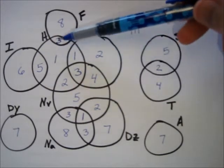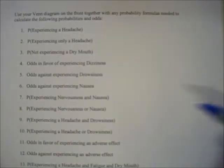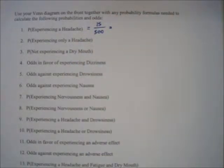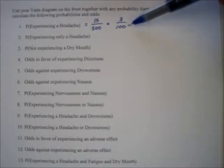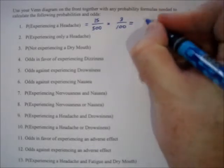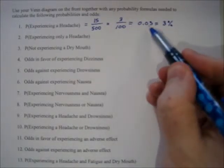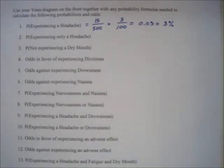We have a total of fifteen people who experienced a headache out of 500. So this is 15 out of 500, which reduces to 3 out of 100. You should always reduce your probability statements as far as possible — it's typical to leave them in lowest fractional form. You could also write it as 0.03 or 3%, but I prefer reduced fraction form.